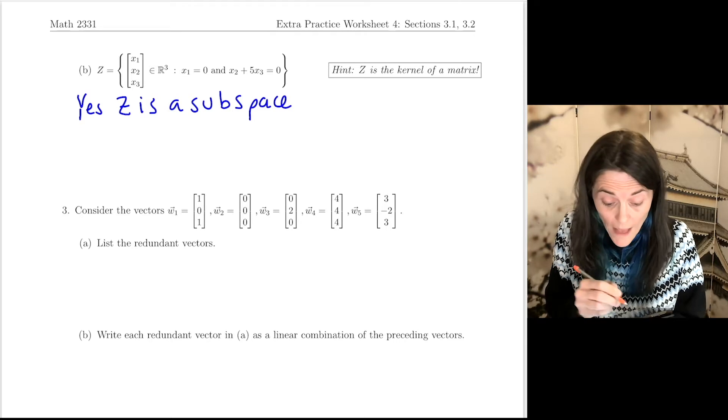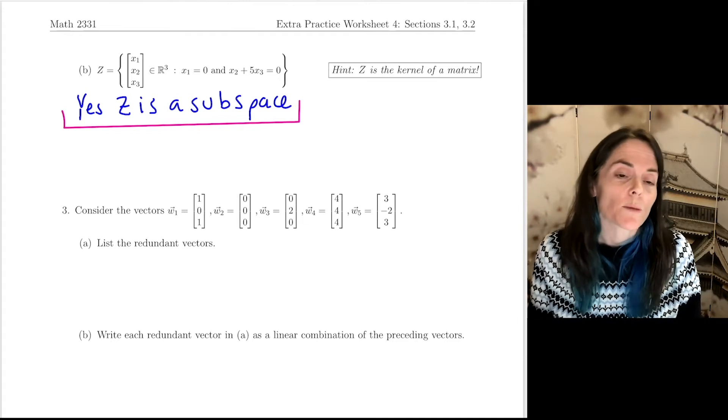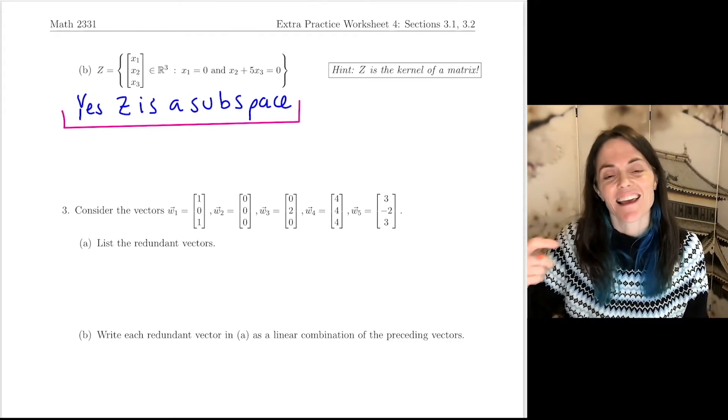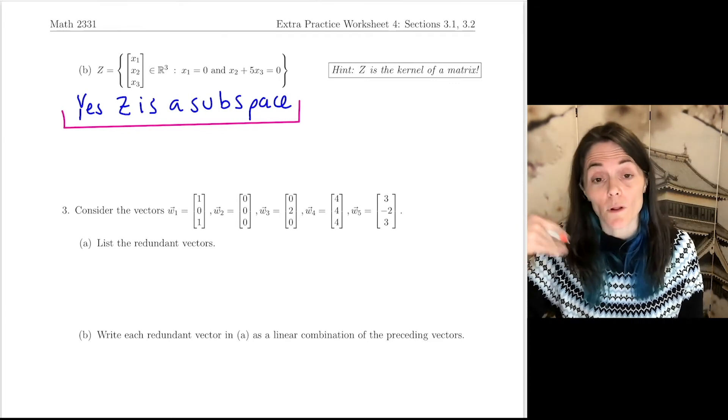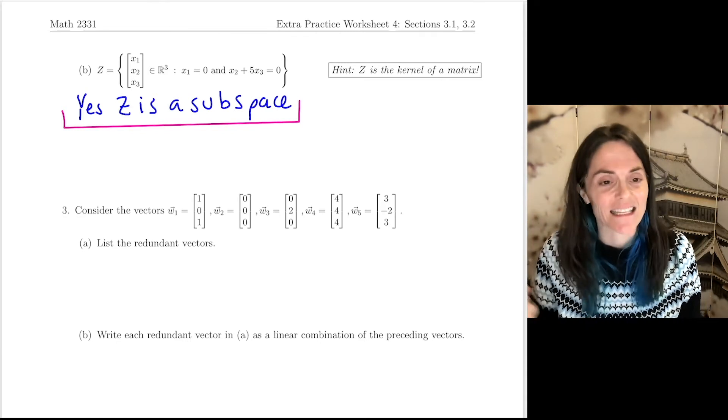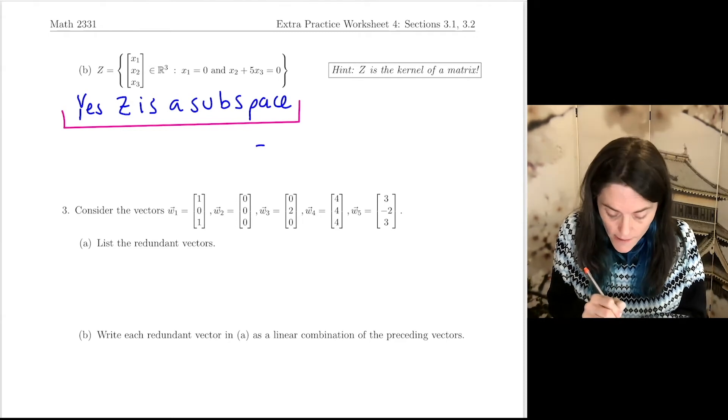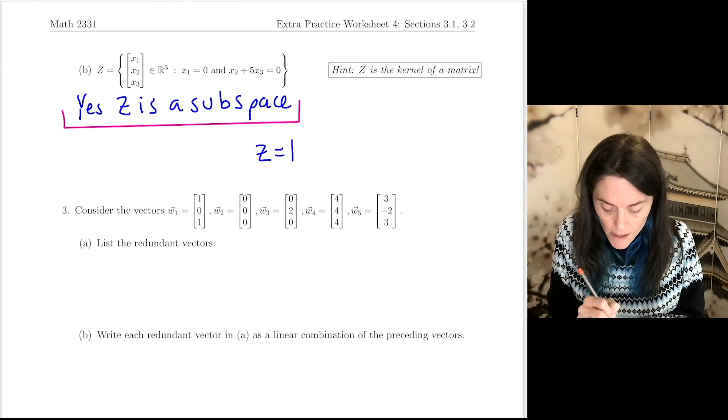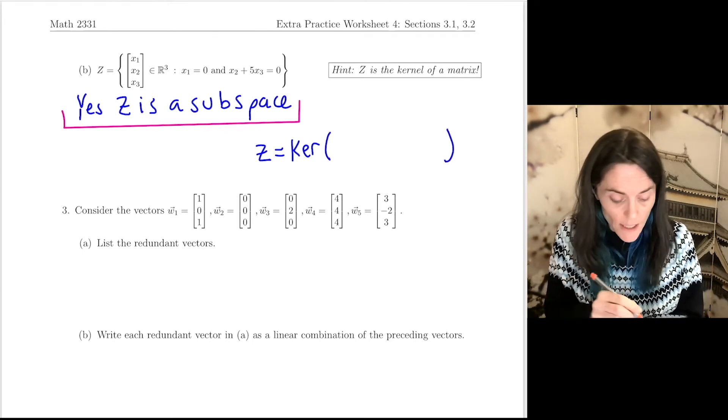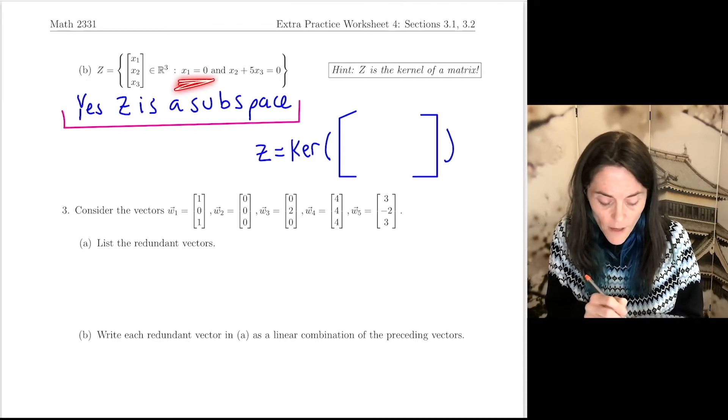Because we know every kernel is a subspace, this can save you time. So if you want to check the properties, the vector 0 is in the set. And then if you have one vector, then any multiple is in the set. If you have two vectors in the set and you add them, that's in the set. You could check those. But we may also justify by just realizing, as we're given in the hint, that this is the kernel of a matrix.